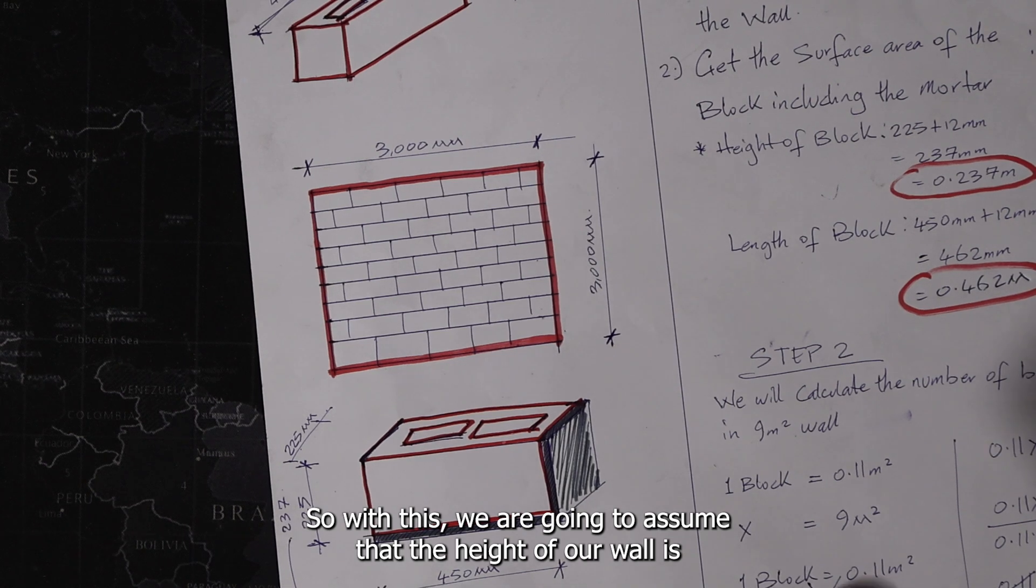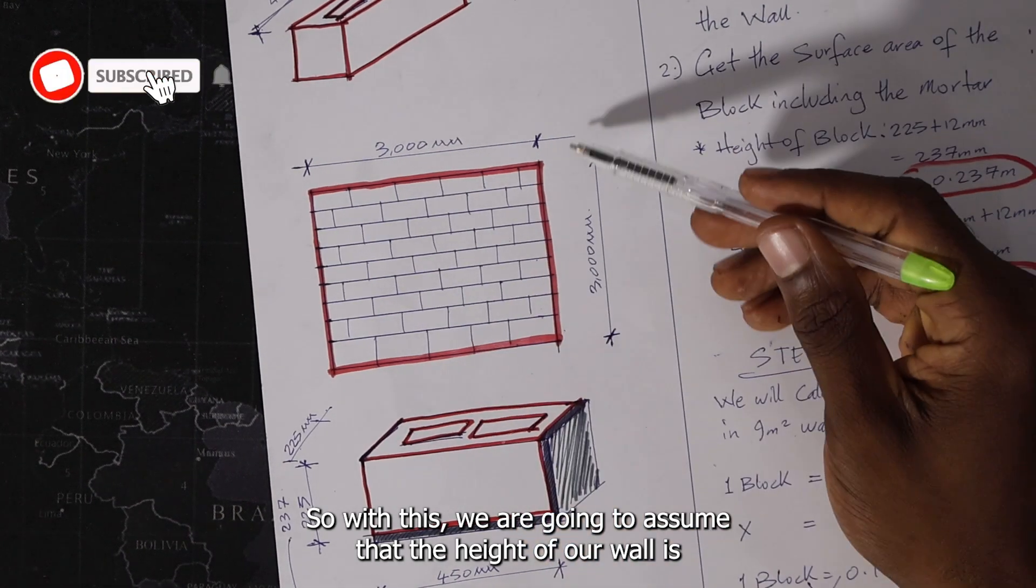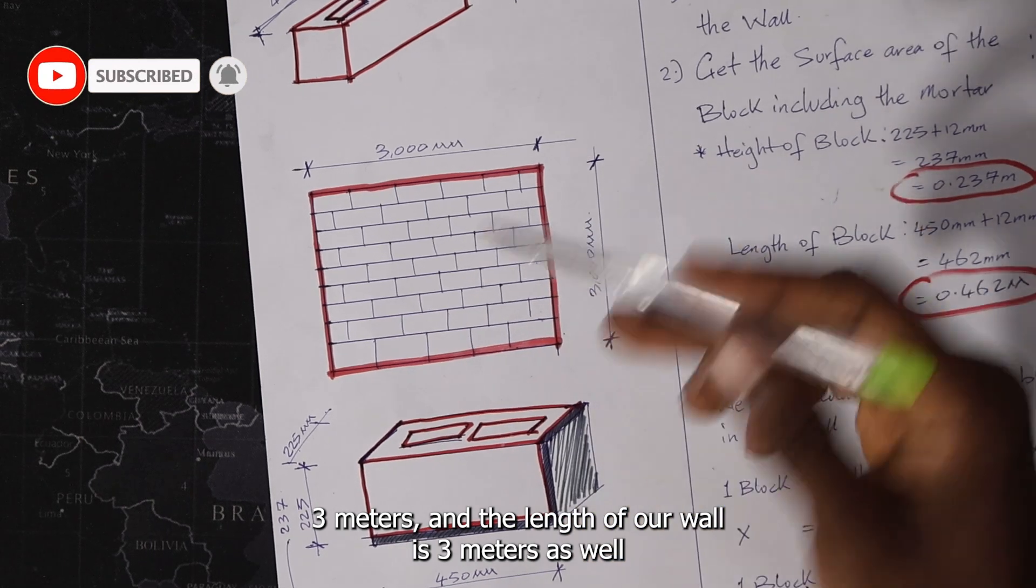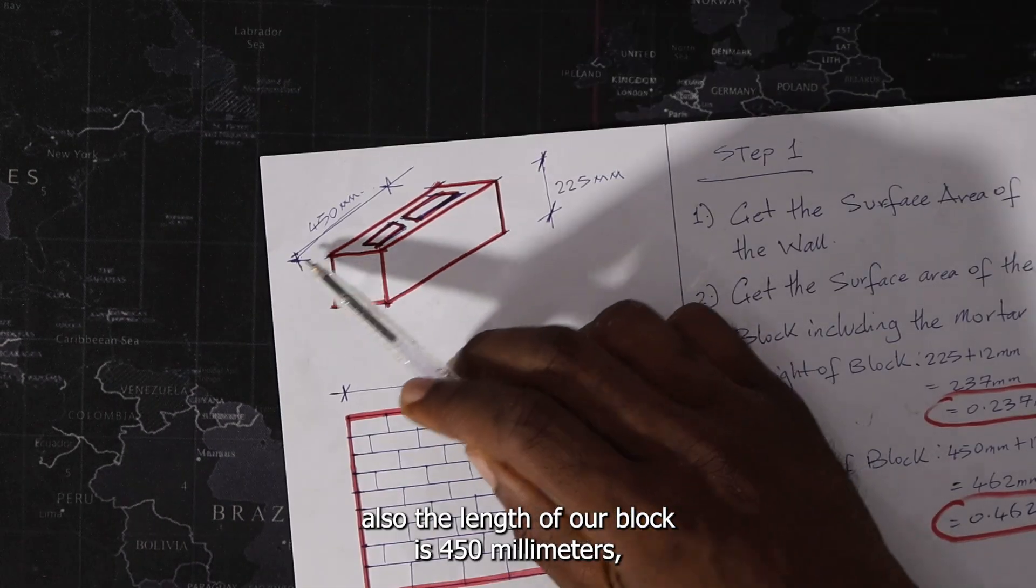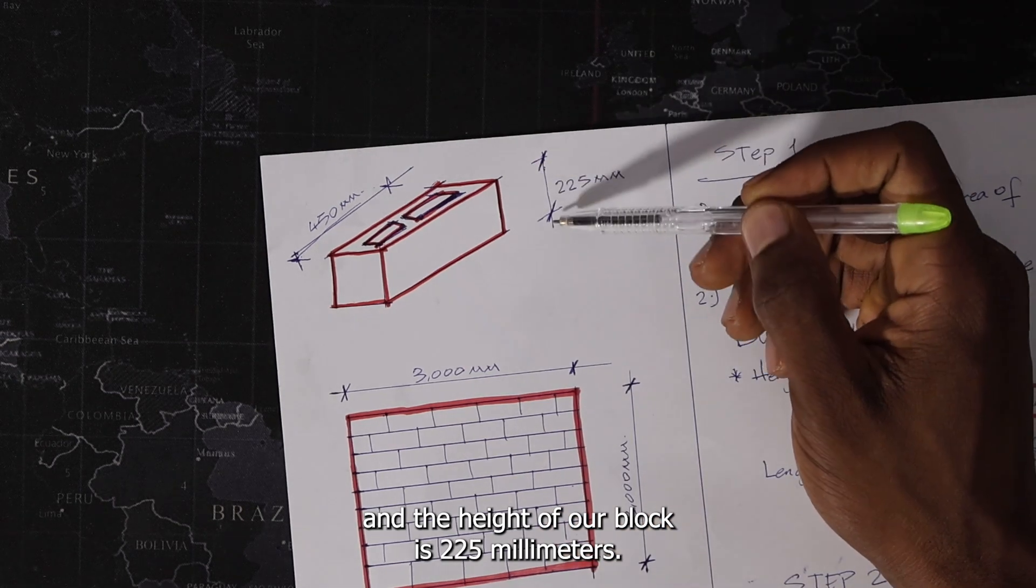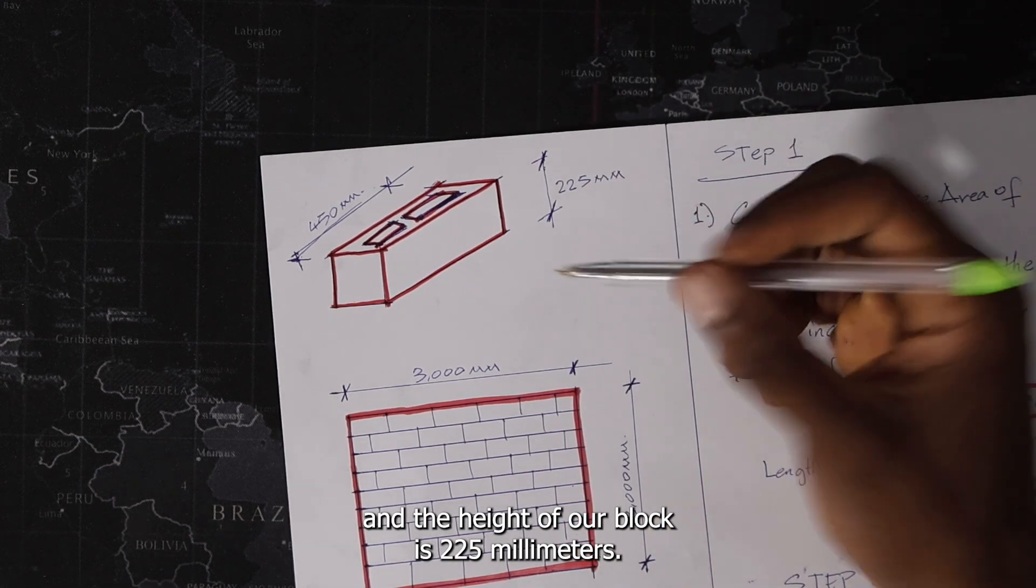So with this, we're going to assume that the height of our wall is 3 meters and the length of our wall is 3 meters as well. Also, the length of our block is 450 millimeters and the height of our block is 225 millimeters.